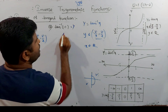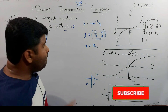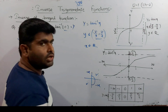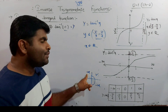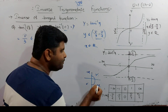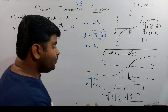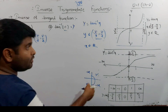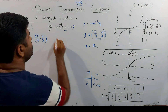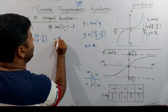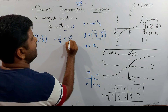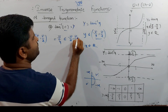Now, let's see when the value is negative. The value is negative, but the second quadrant is not valid here because we are restricted to the interval minus π/2 to plus π/2. So the value is negative and equals minus π/4, which belongs to the interval from minus π/2 to plus π/2.